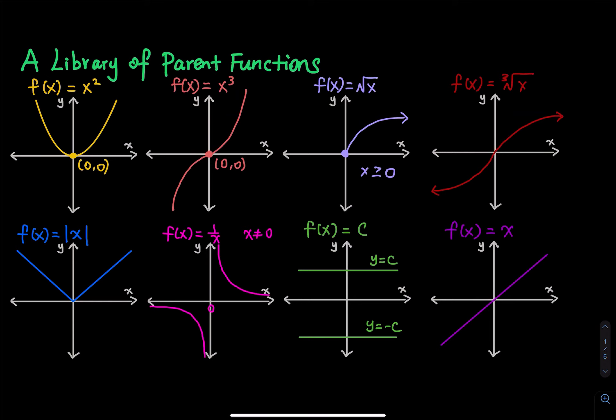A library of functions is a set of functions that you have to know what the graph looks like. For example, f of x equals x squared — you have to know that the graph is a parabola. So starting from this lesson, every time I ask you to think about the graph of a function, you should know what it looks like immediately. You should not be touching your calculator or looking it up on Google. So let's do a quick go-through.